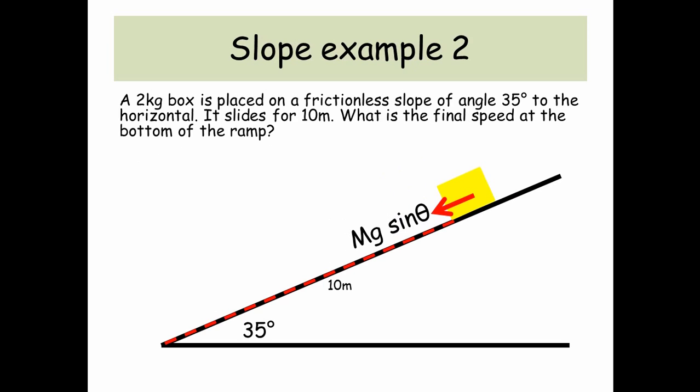A 2 kilogram box is placed on a frictionless slope of angle 35 degrees to the horizontal and it slides from rest for a distance of 10 meters. What's the final speed at the bottom of the ramp?